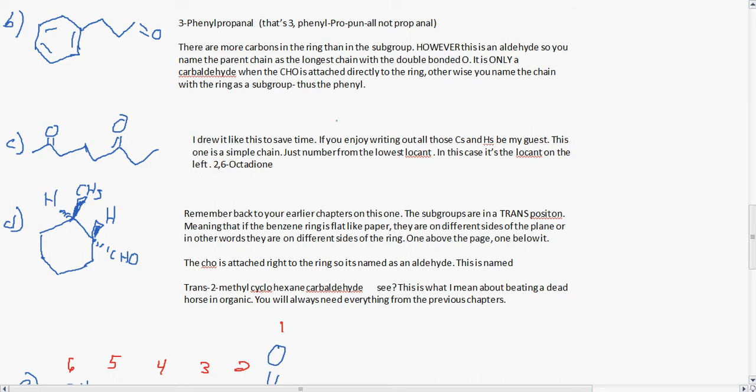C, I drew the skeletal structure just to save time. If you enjoy writing out all those C's and H's, be my guest. This one is a simple chain, just remember to number from the lowest locant. In this case, it's the locant on the left, 2, 6-octadione. You can use the dione, trione, etc. as you get into the bigger more complicated molecules, but generally at this level you won't be doing anything like that until grad school, hopefully.